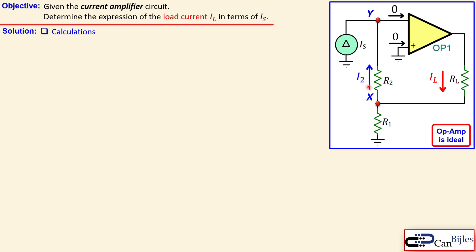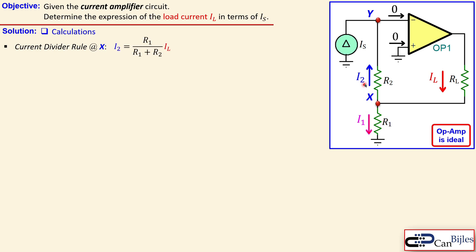I've randomly picked the current directions: the current through R2 is going up, and there is also another current I1 for resistor R1 going down. The load current will split into two parts, I2 and I1, and I would like to apply the current divider rule at node X. Part of the load current will go into I1 and another part into I2, so I want to set an expression for I2 using the current divider rule.